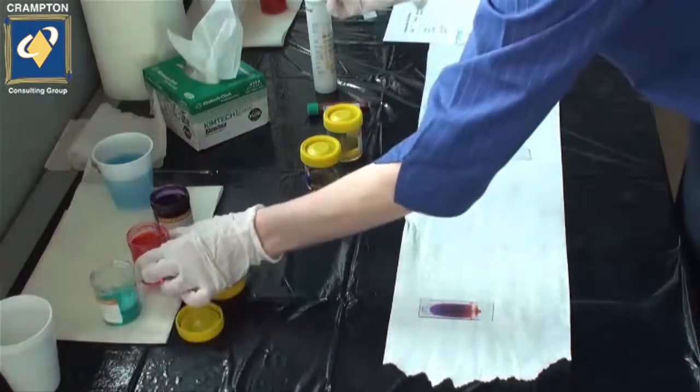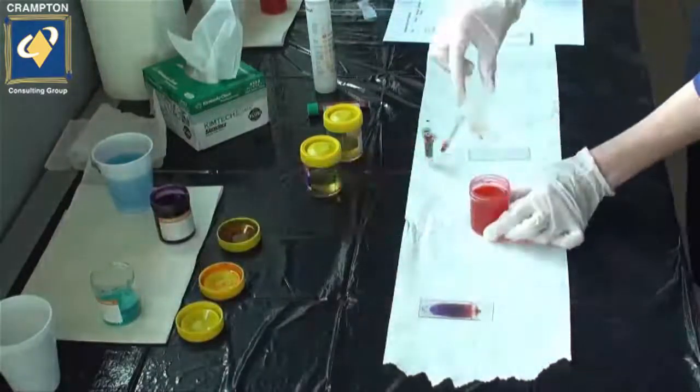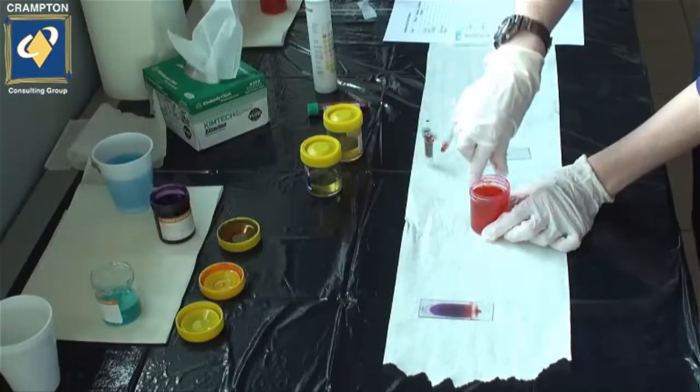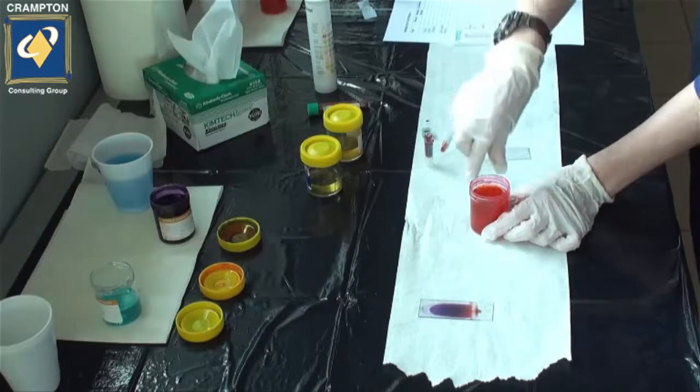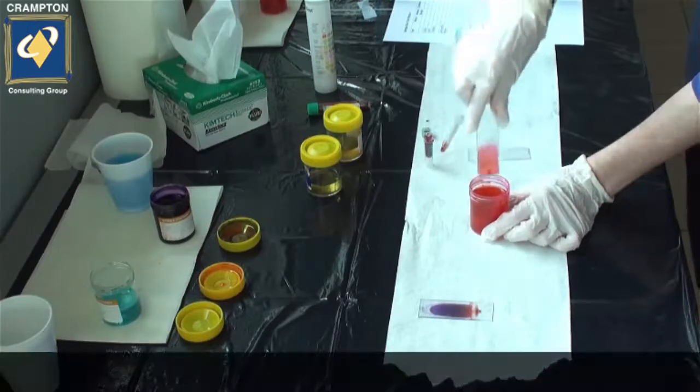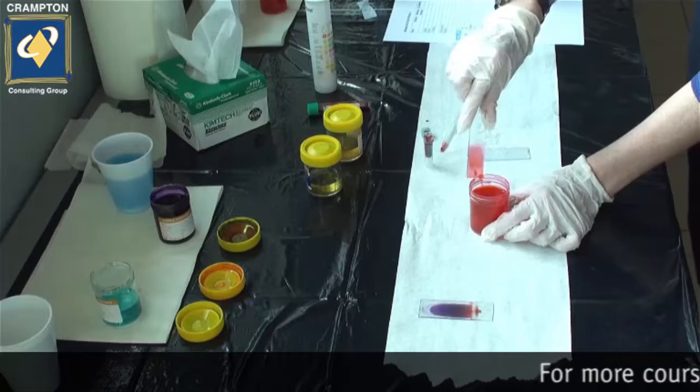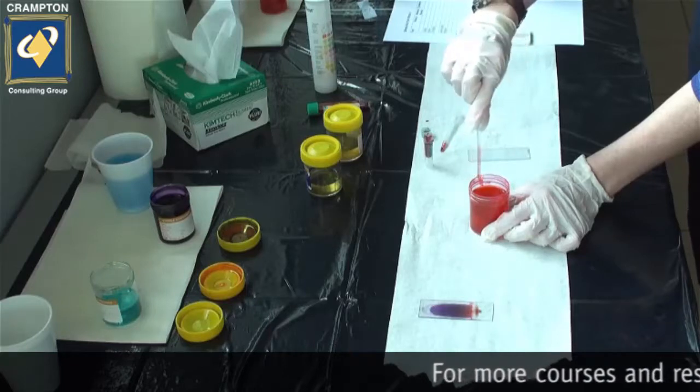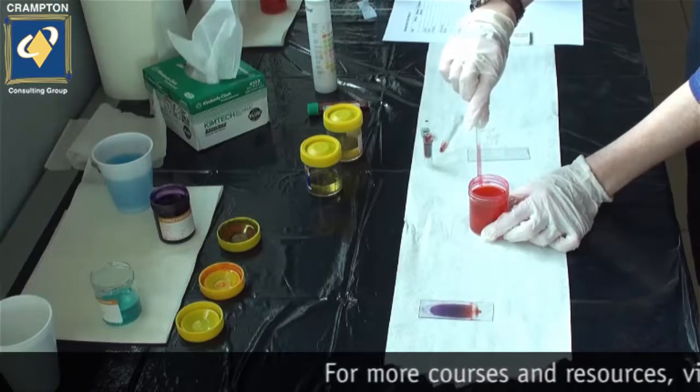Again, we go on to the second stain, which contains eosin. Certain parts of the white blood cells will take up this particular stain and help differentiate between nucleus and cytoplasm.